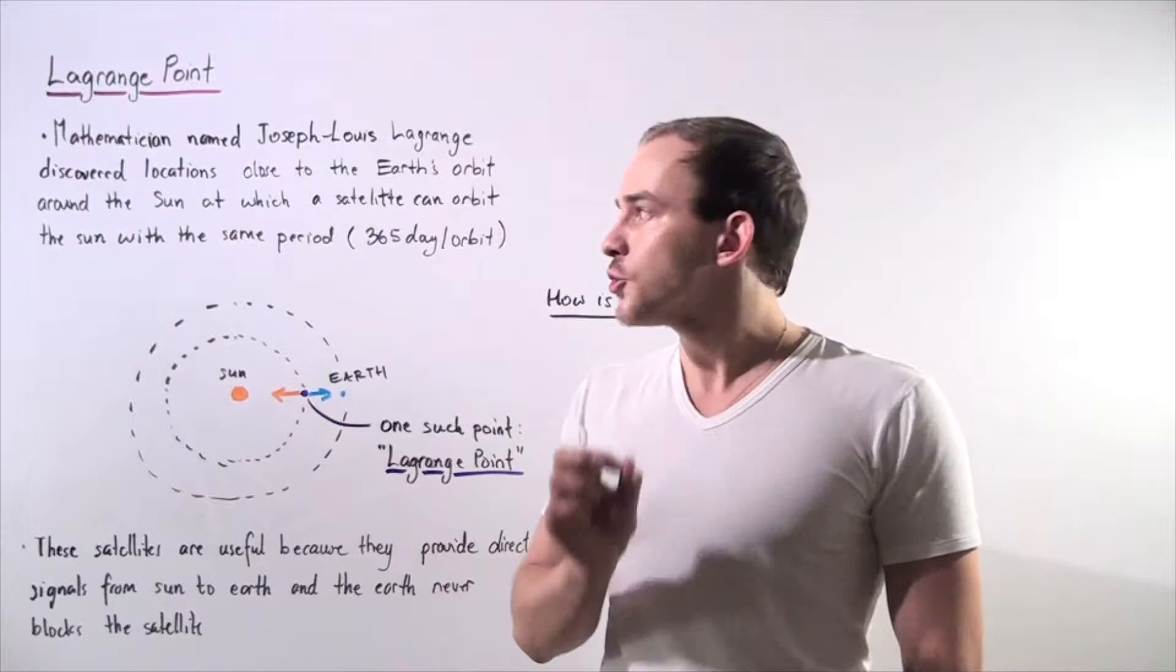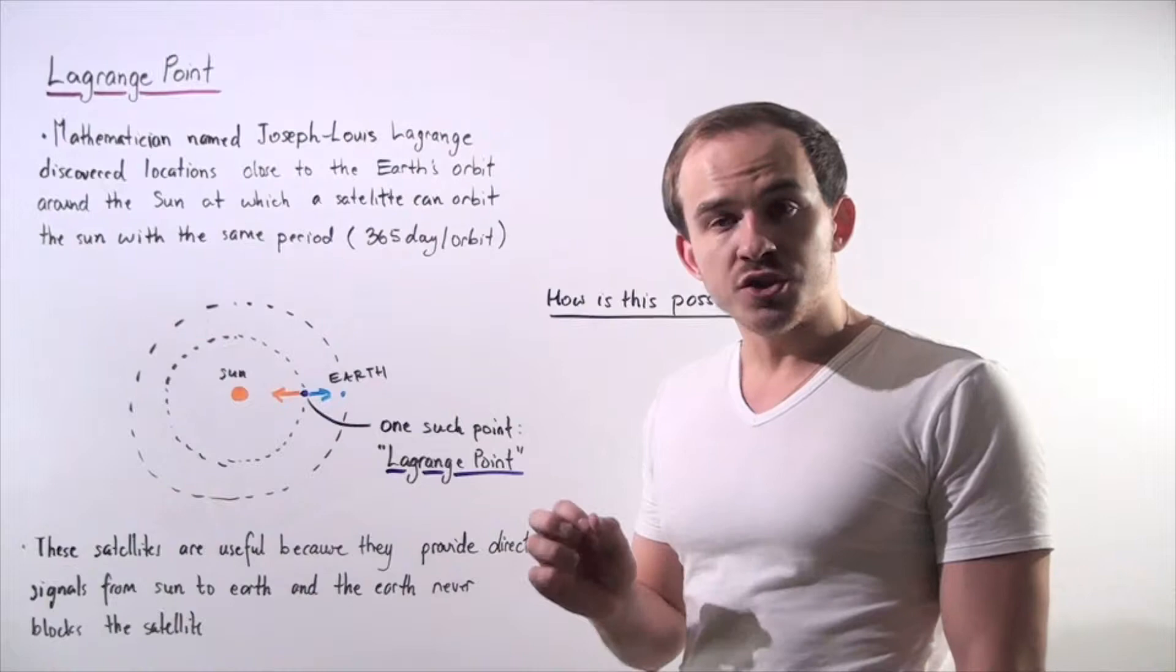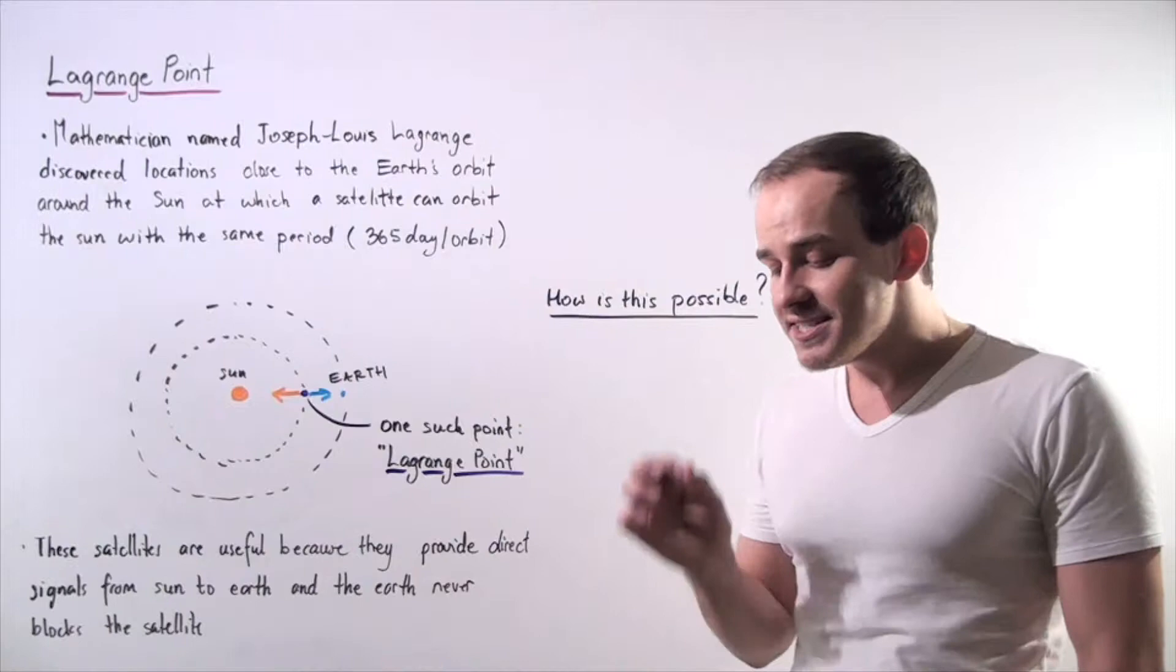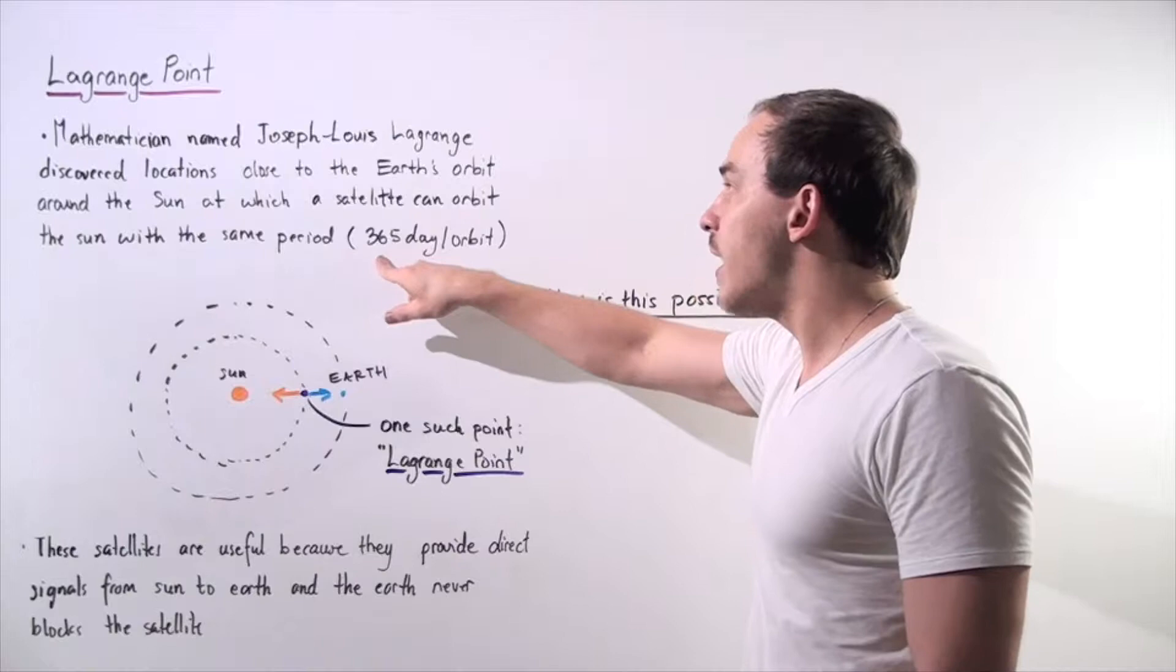Now, a mathematician by the name of Joseph Lewis Lagrange was able to discover locations close to the Earth's orbit around the sun at which a satellite can orbit the sun with the same exact period as the Earth, namely 365 days per orbit.